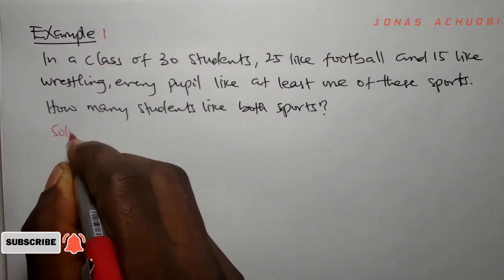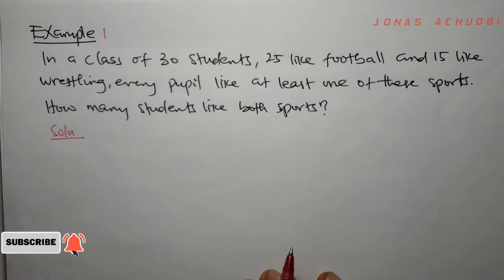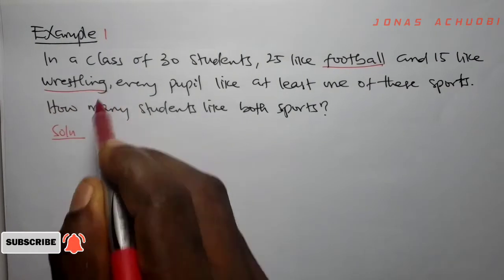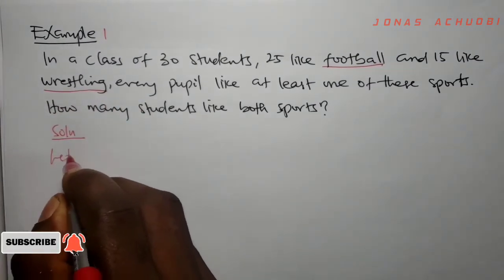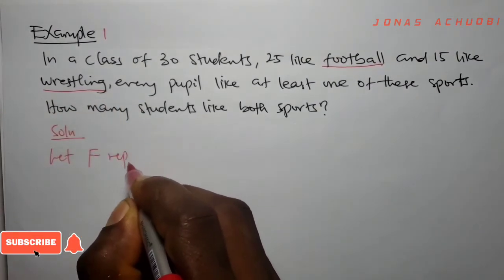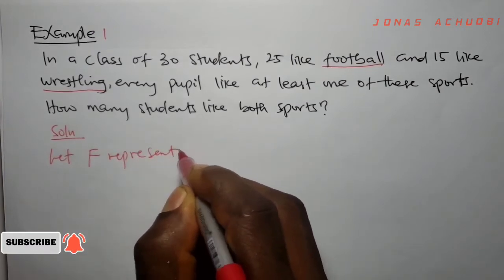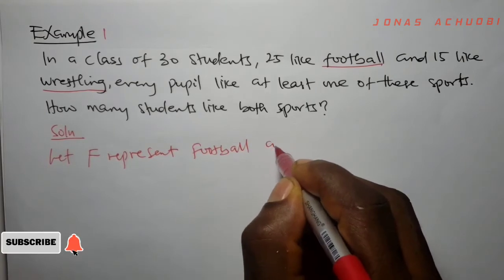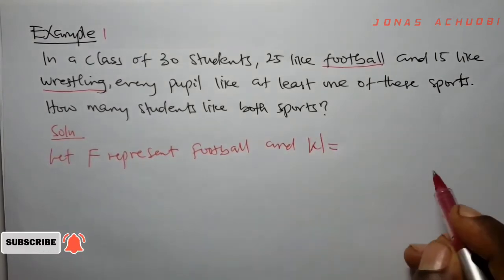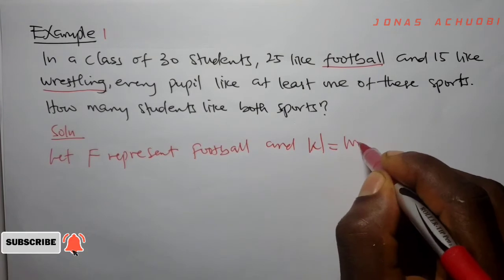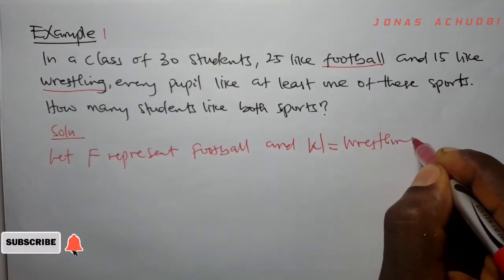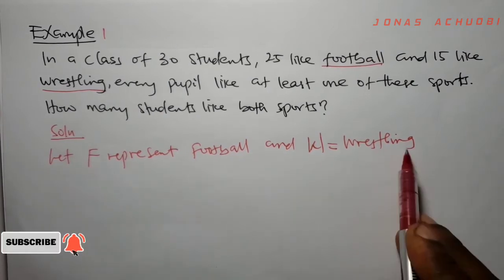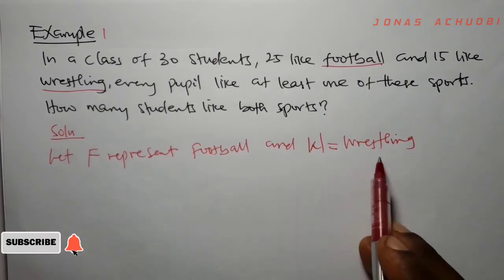The first thing we do is define our sets. Since there are two sports, we say let F represent football and let capital W represent wrestling. So instead of writing football we just write F, and instead of writing wrestling we just write W.